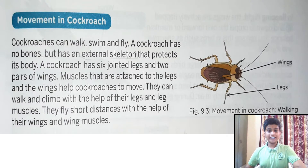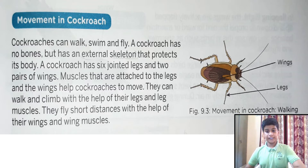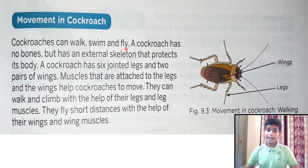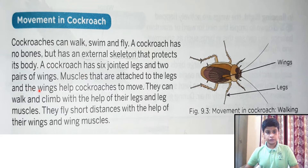Movement in Cockroach. So friends, just like we all know, cockroach is an insect. A cockroach has no bones but has an external skeleton that protects its body. A cockroach has six jointed legs and two pairs of wings.